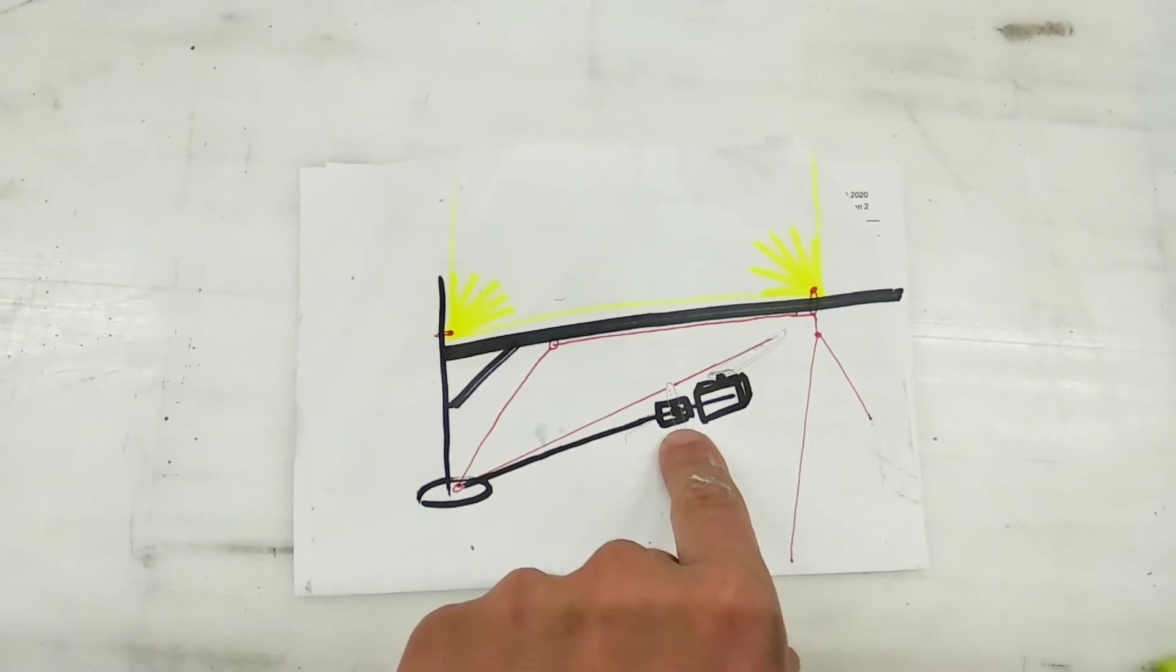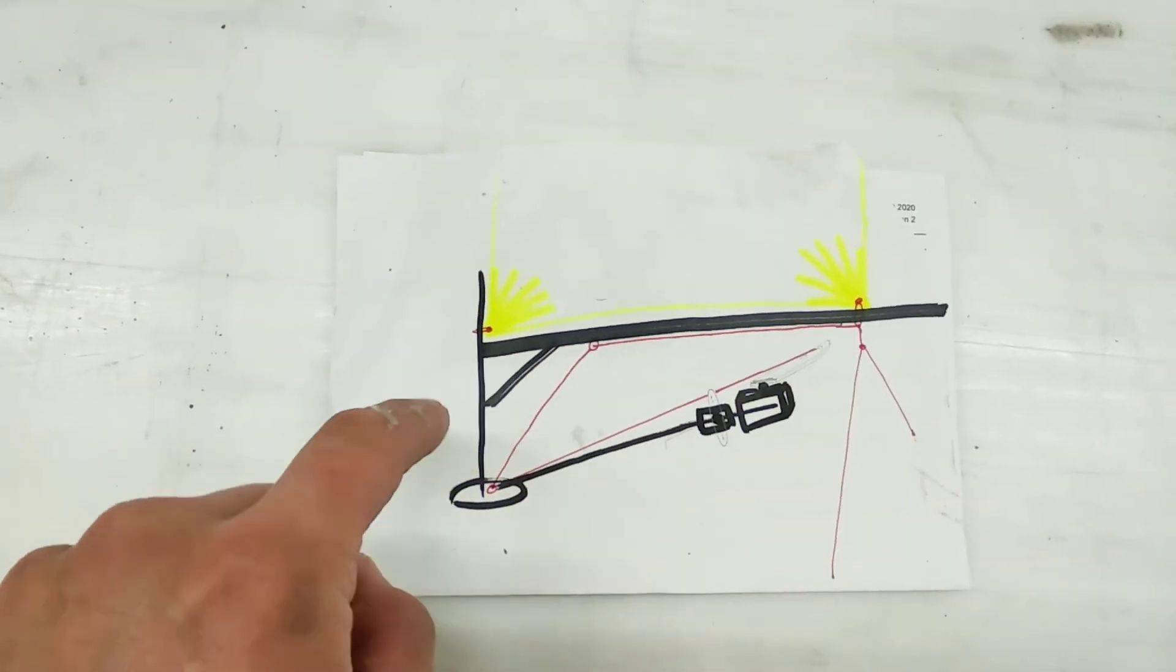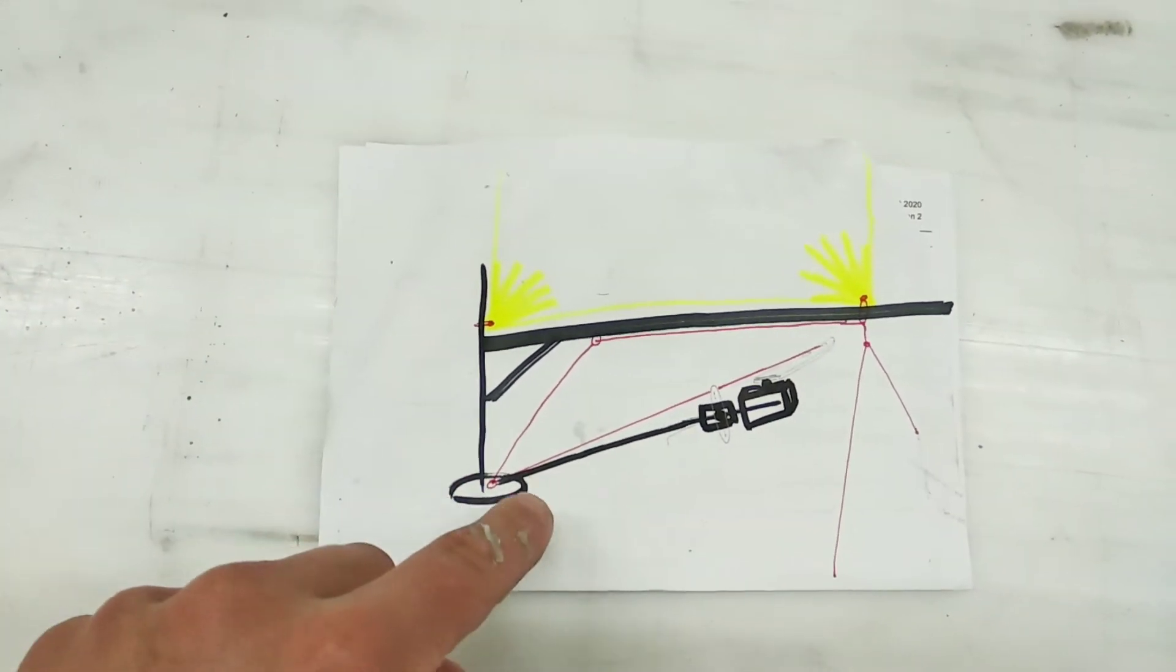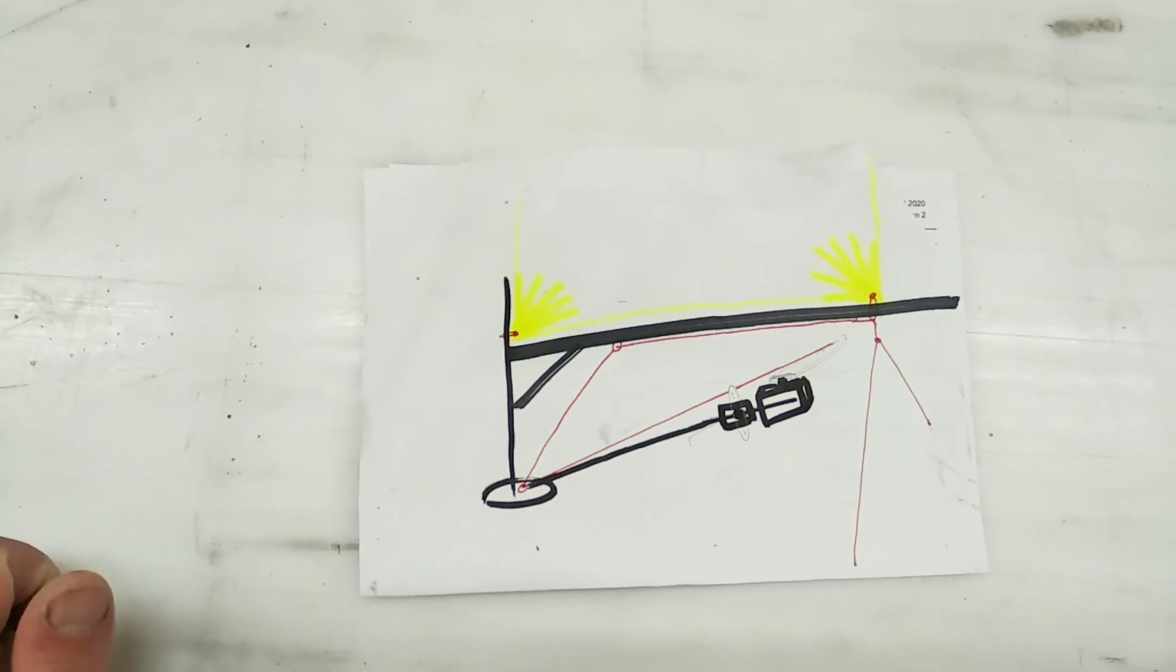I will explain that later. Here we have the sail with the boom and kicker or vang. This is the mast and this is something like a big bearing.